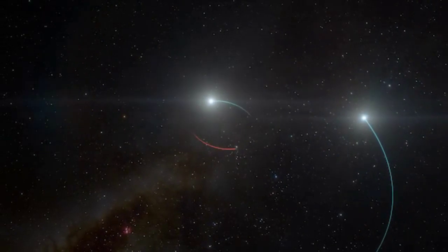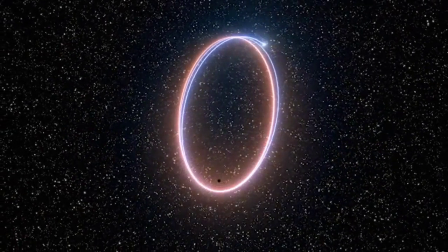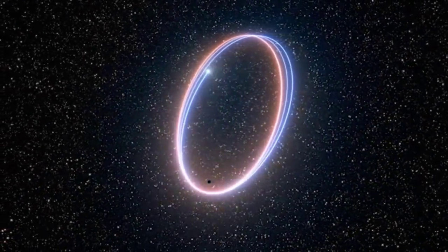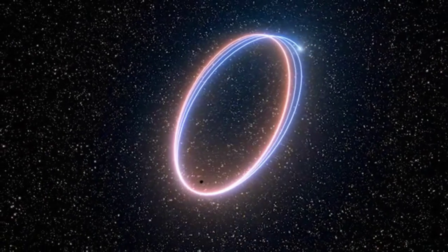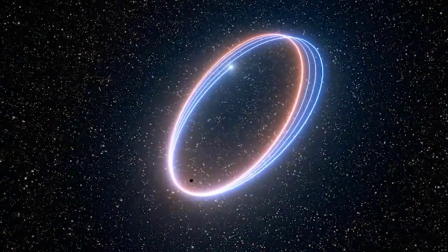One is by looking at the way stars around it move. In 2002, astronomers managed to capture the motion of a star named S2 around the object at the center of the Milky Way. The star was clearly orbiting some invisible thing, and that thing is what we now call the supermassive black hole Sagittarius A star.